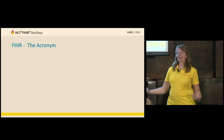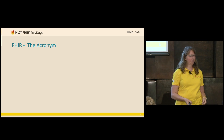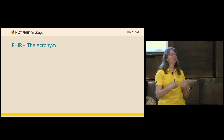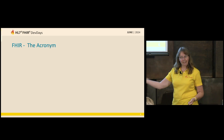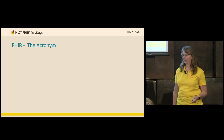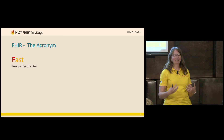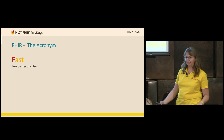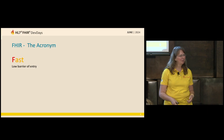They wanted to create a new standard and didn't want to call it HL7 version 4. This was not an update of something that already existed — they created FHIR from scratch. They came up with an acronym where the F stands for Fast. If you are a developer who knows HTTP calls, APIs, JSON or XML, you have a low barrier of entry, so it's relatively fast to get up and running with this new standard.